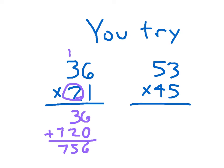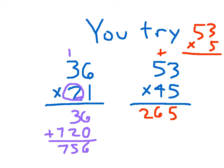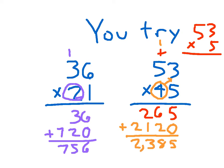For the next problem, most of you will have that first line correct — multiplying a two-digit number by a single-digit number. Remember to cross out the regroup as you continue. The 4 is worth 40, so place a magic 0. Then 4 times 3 is 12: write the 2, regroup the 1. 4 times 5 is 20, plus 1 is 21. Add those two numbers and we get 2,385. So 53 times 45 is 2,385.